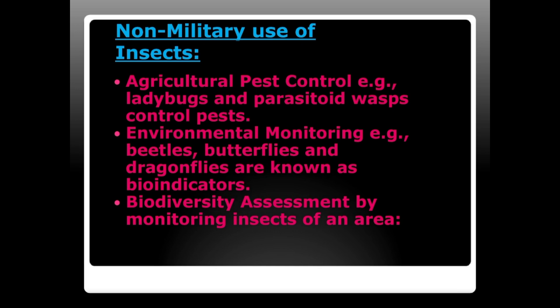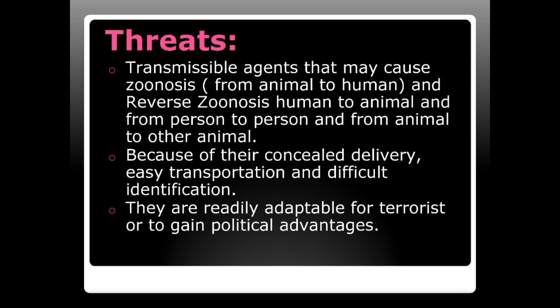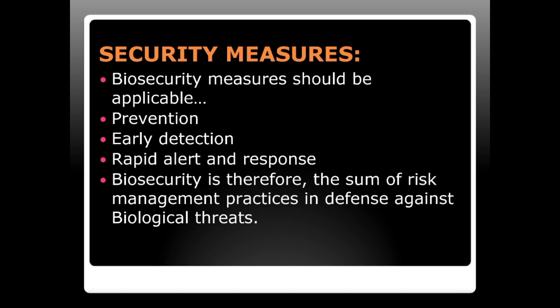Some threats exist because insects are transmissible agents that may cause zoonosis — from animal to human, reverse zoonosis from human to animal, person to person, and animal to animal. Due to their concealed delivery, ease of transportation, and difficult identification, they are readily adaptable for terrorists seeking political advantages. Security measures should include prevention, detection, rapid alert and response, and biosecurity as a form of risk management against biological threats.